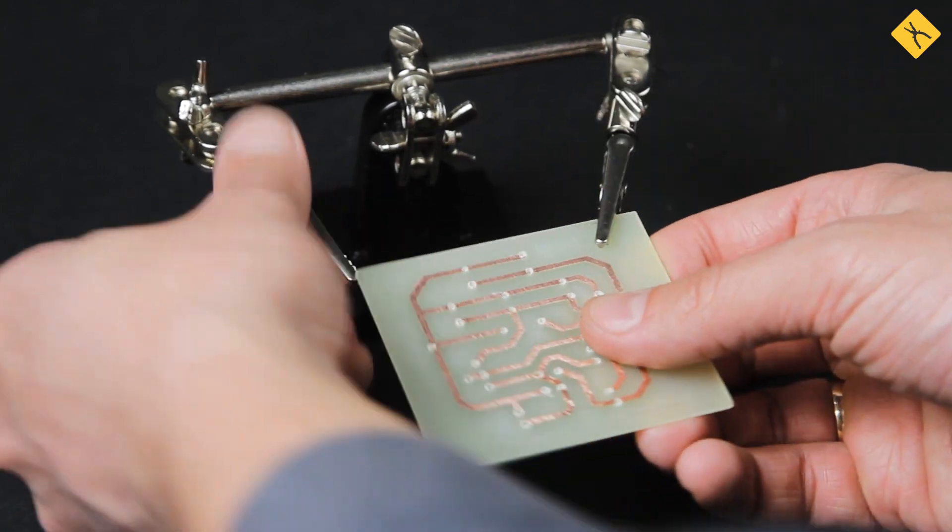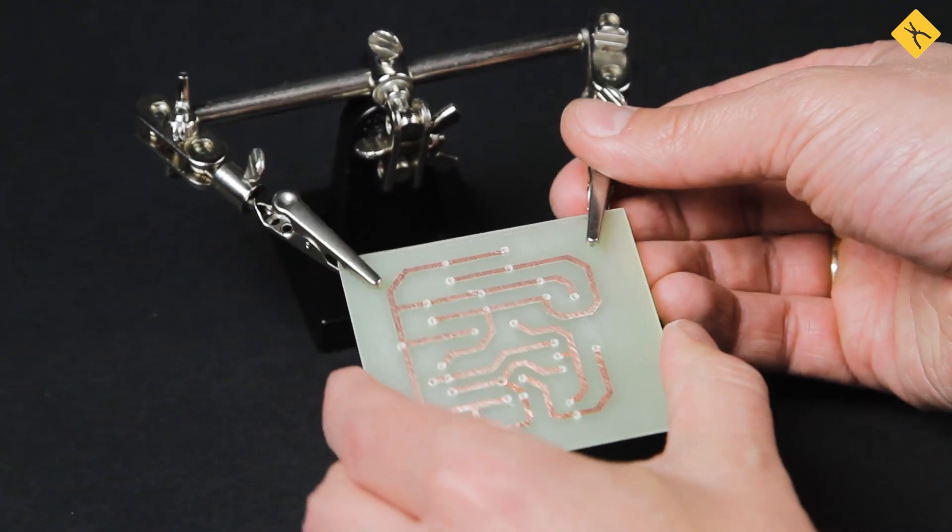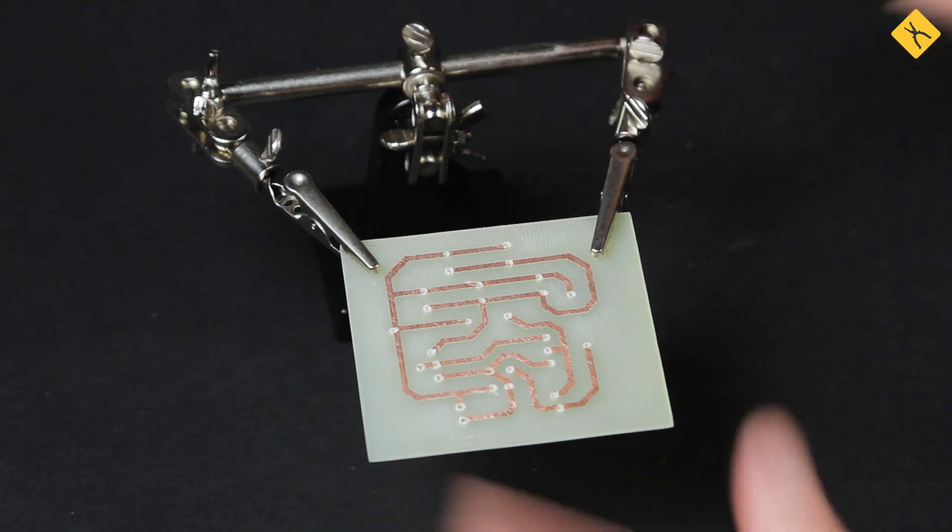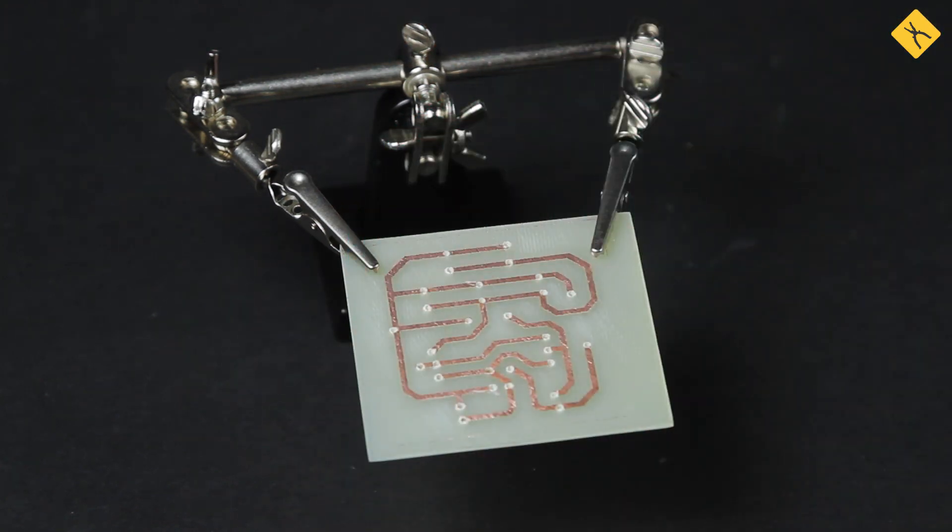Now we'll turn the board. Apply flux first and then cover it with solder.